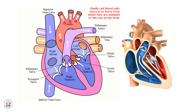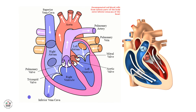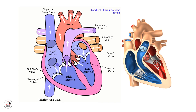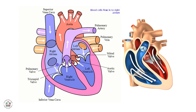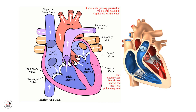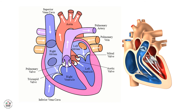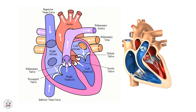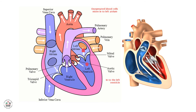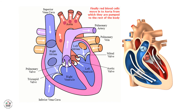The right part of the heart carries deoxygenated blood; the left part carries oxygenated blood. The superior and inferior vena cava bring blood to the right atrium, then through the tricuspid valve to the right ventricle, then through the pulmonary artery to the lungs. After the lungs oxygenate the blood, it returns via the pulmonary veins to the left atrium, through the bicuspid valve to the left ventricle, and then out through the aorta to all body organs.